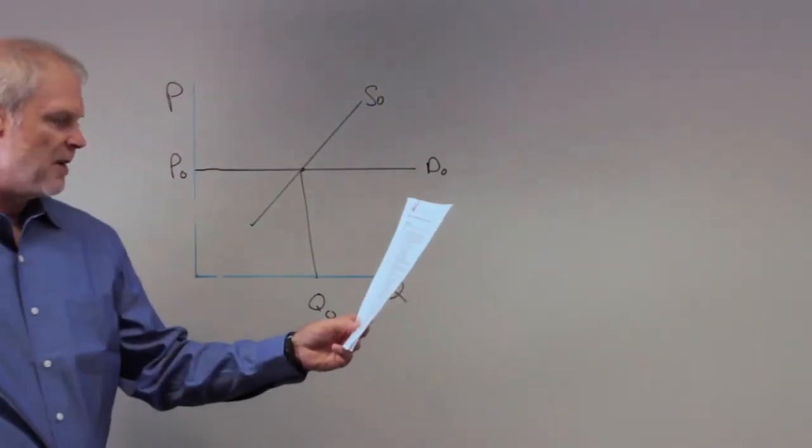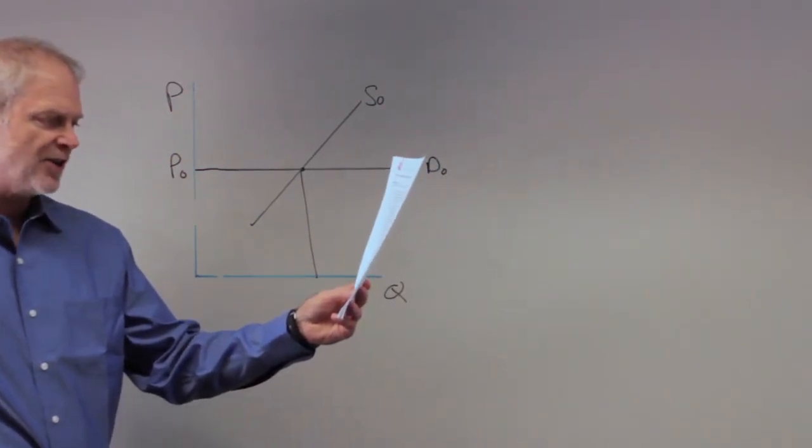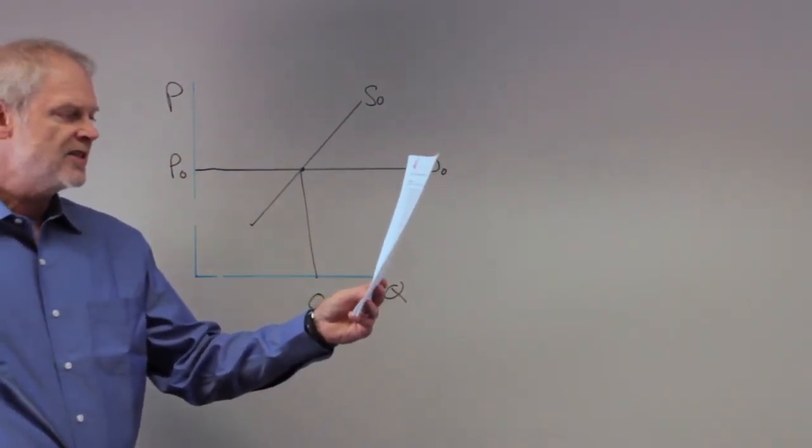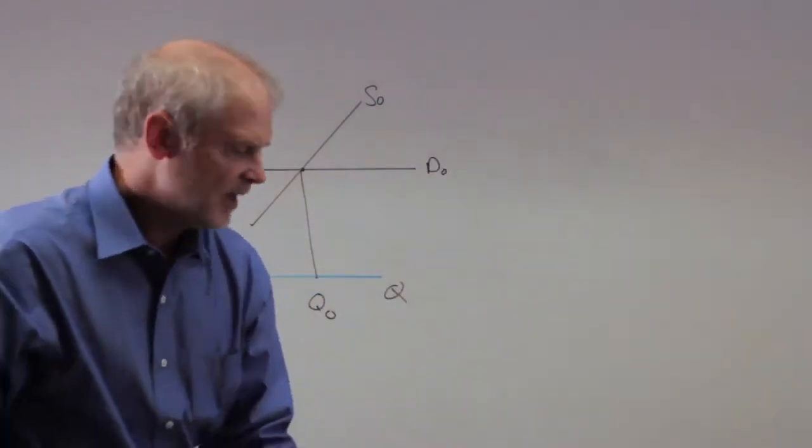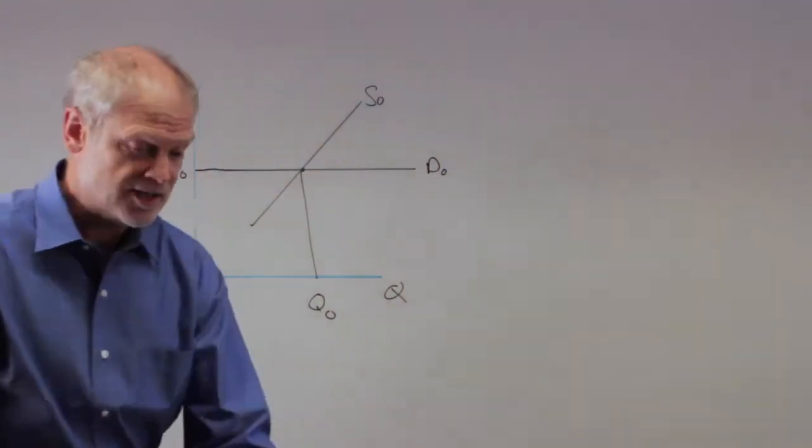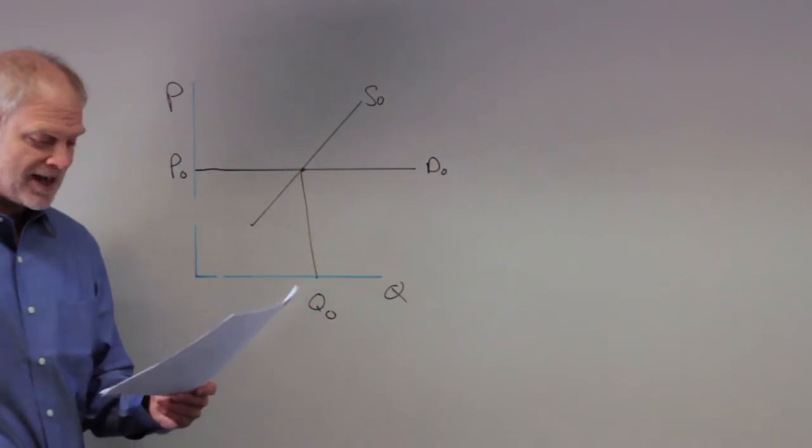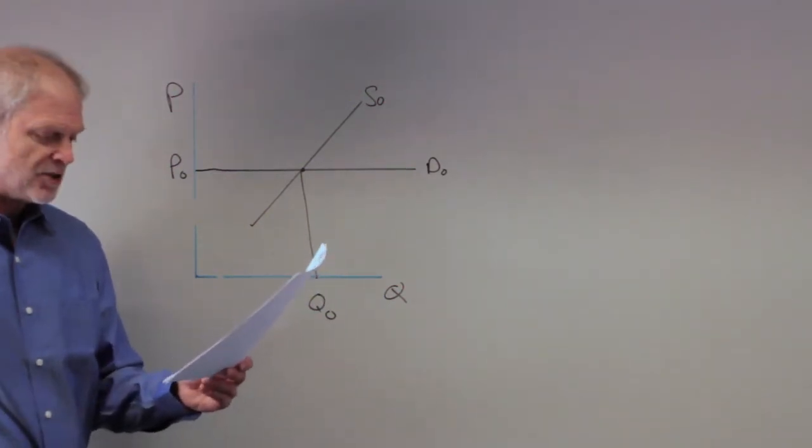(B) Any rise in price above that represented by the demand curve will result in a quantity demanded of zero. That's actually right—anything that goes above P0, consumers are so sensitive they're going to buy nothing. Hold on to B.